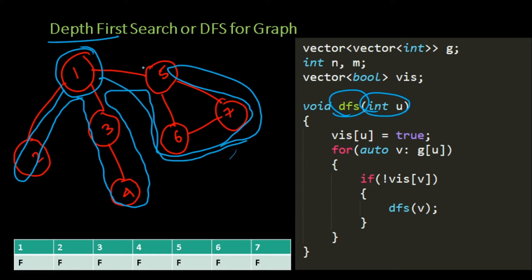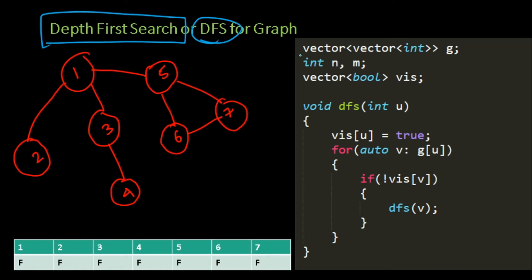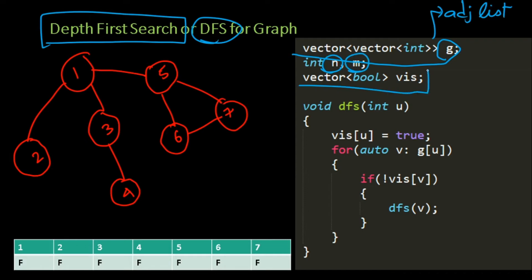This navigation technique is called depth first search. For the implementation, I am representing my graph as a vector of vectors of integers — this is the adjacency list. I have N vertices and M edges. An important aspect of DFS is the visited array — a boolean vector. This records whether I have visited a particular node or not, because this is a navigation problem and I need to track where I've been.